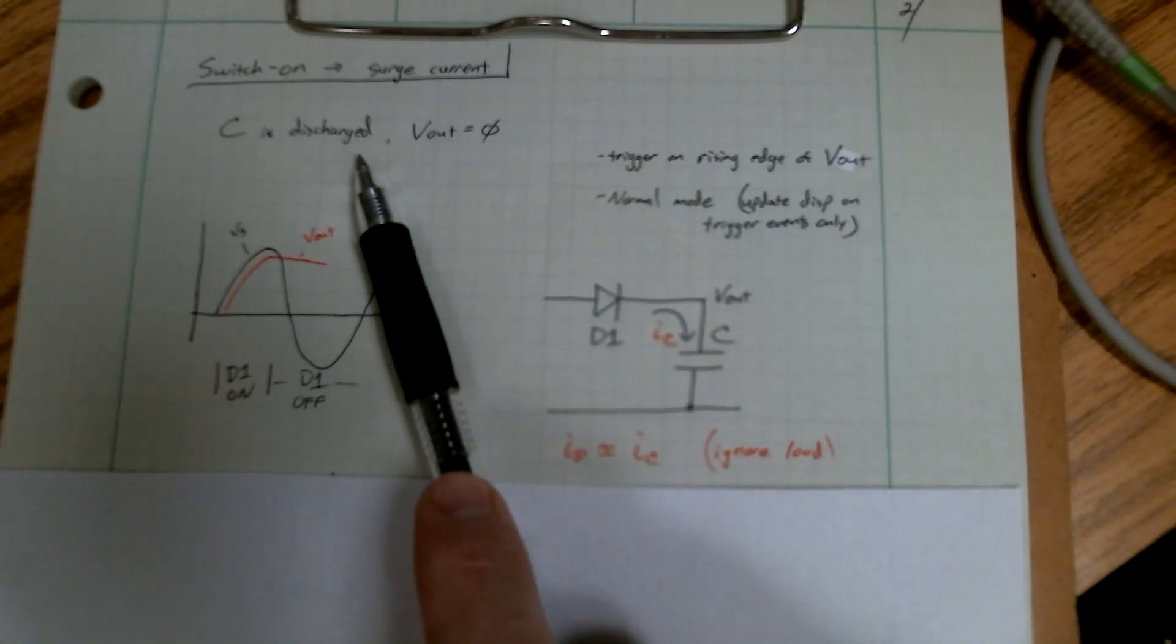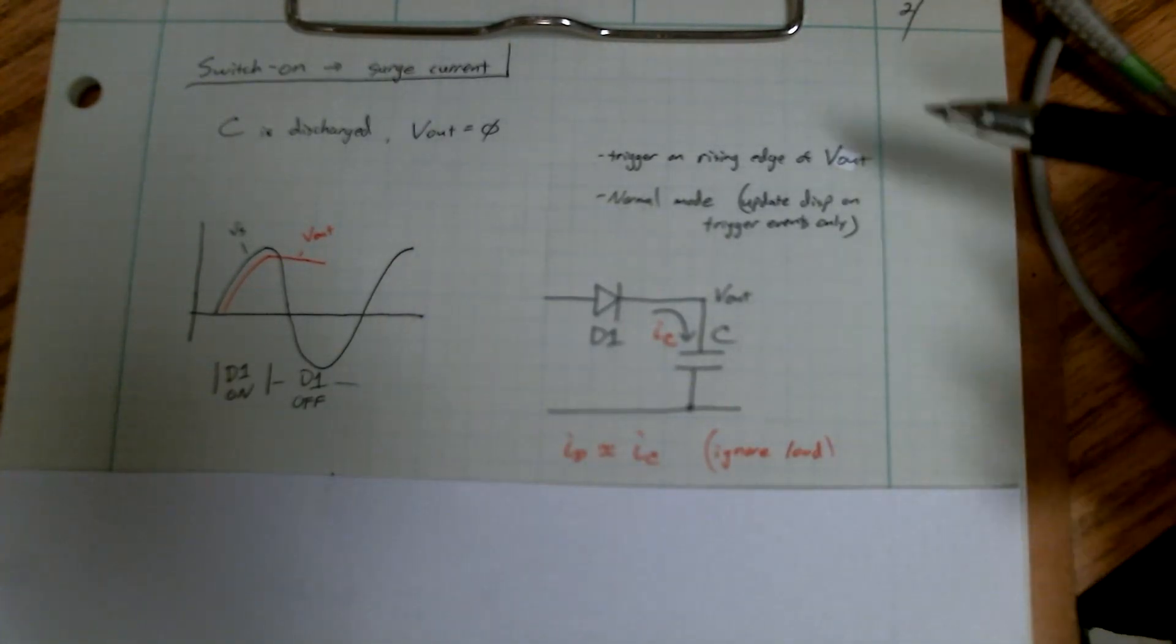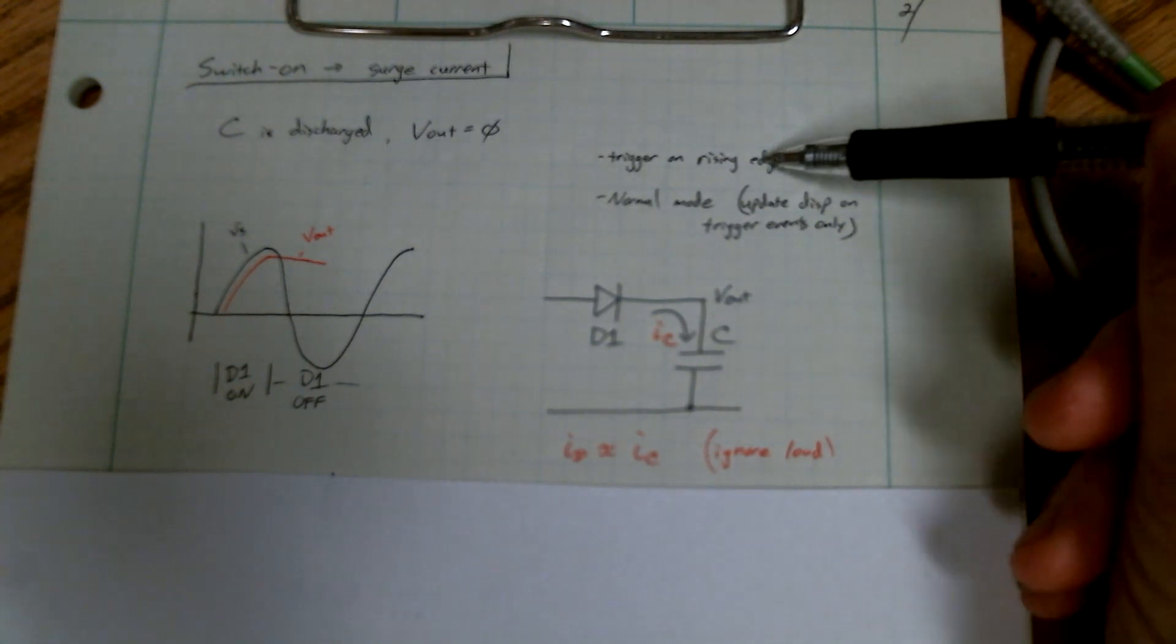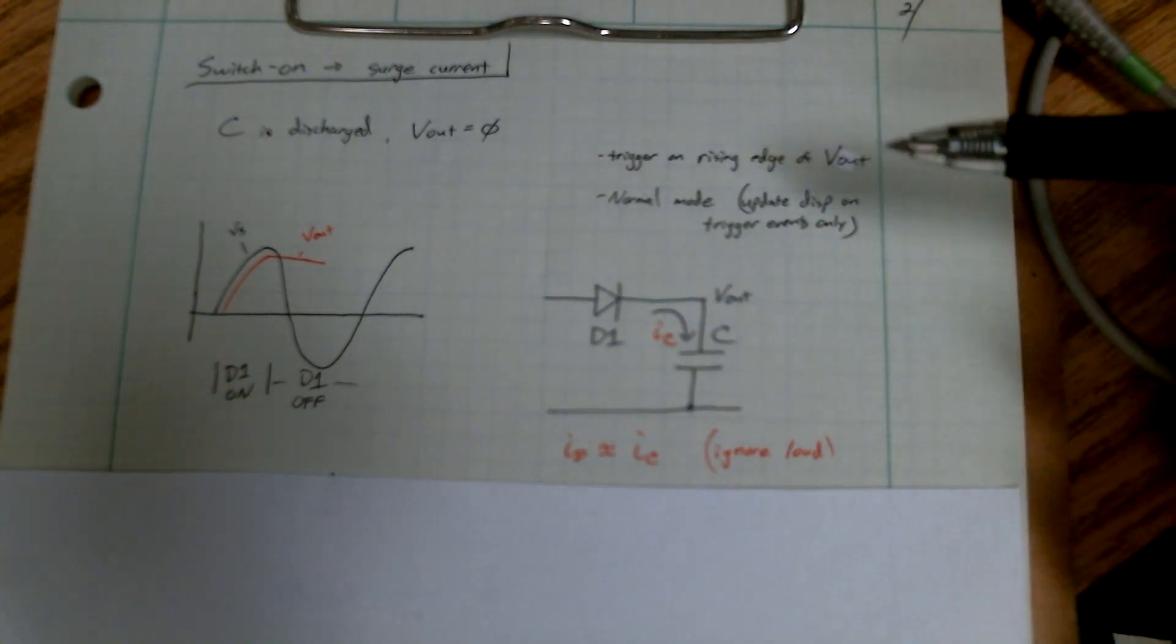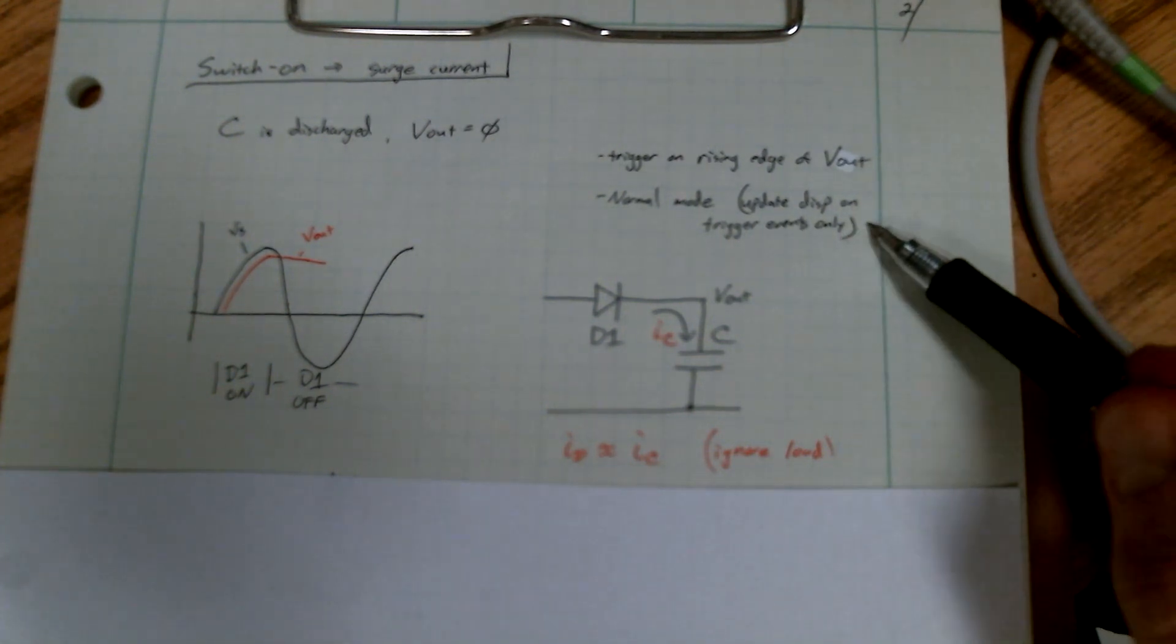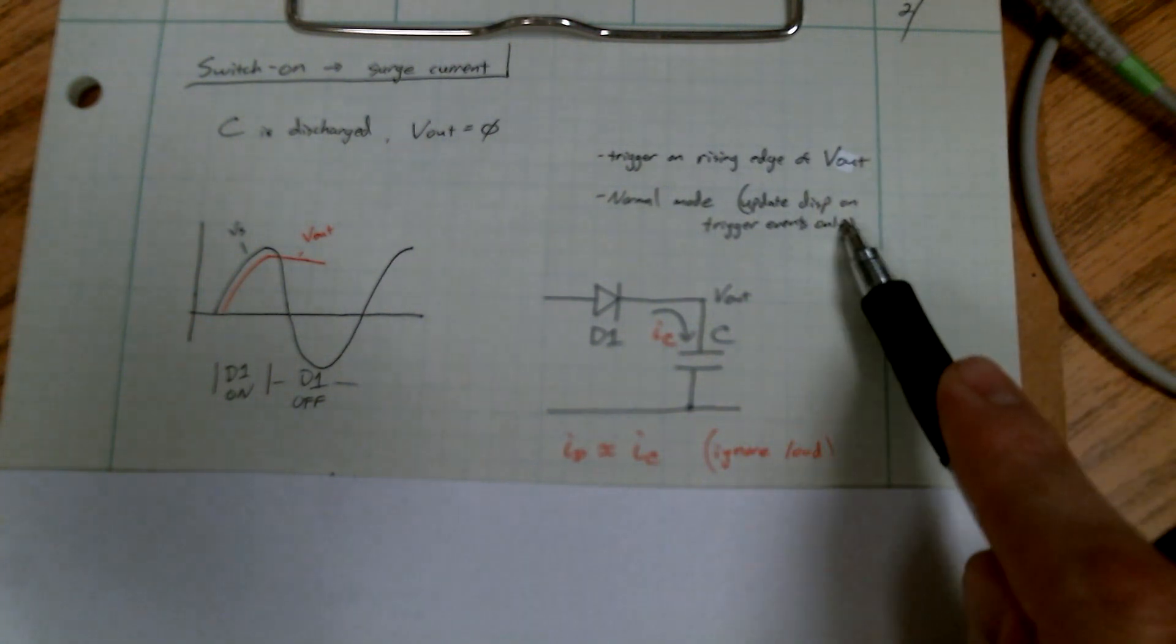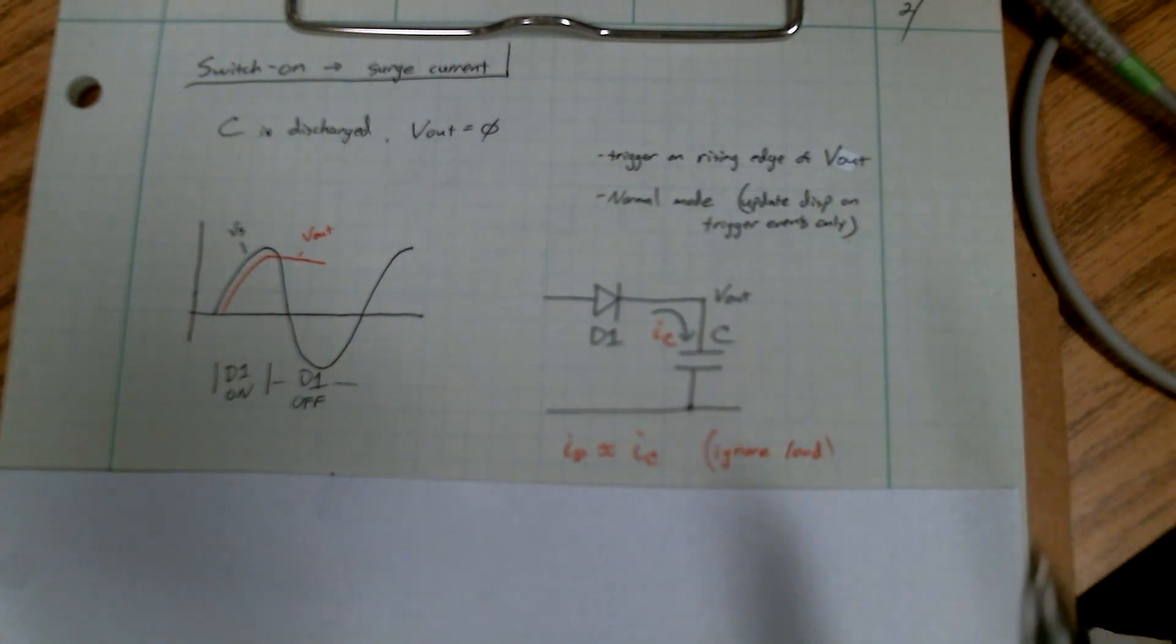Conditions that happen: capacitors discharge all the way, the output is zero. To capture this transient, I'm going to trigger on the rising edge of the output, which is channel two, and I'm going to turn the scope to normal mode, which it's usually in auto mode.